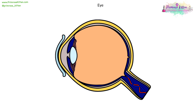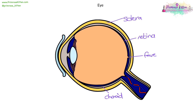The eye has a number of different parts. This is the sclera. On the inside of the sclera you've got the choroid. On the back of the eye you've got the retina. The centre back of the eye is called the fovea. The fovea contains the highest concentration of cones, because that's where we see the most colour.